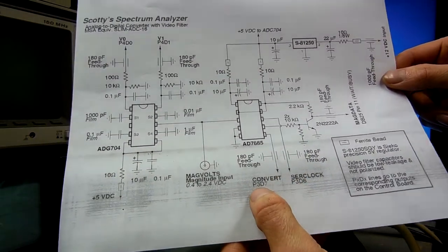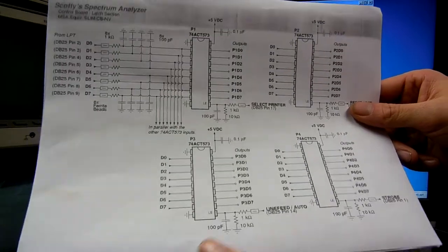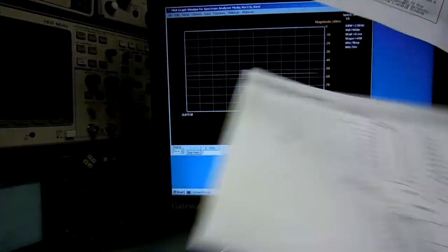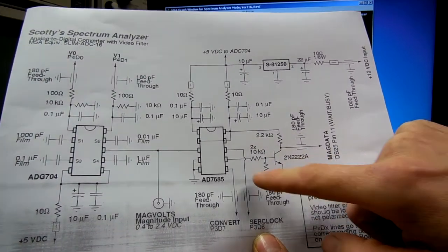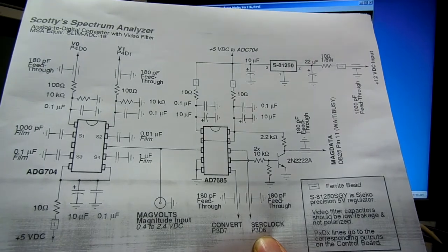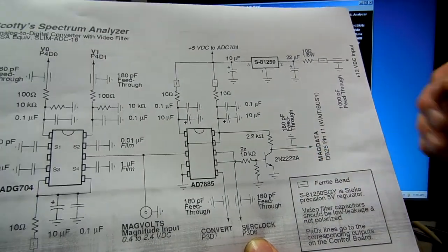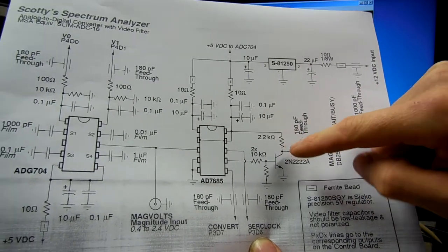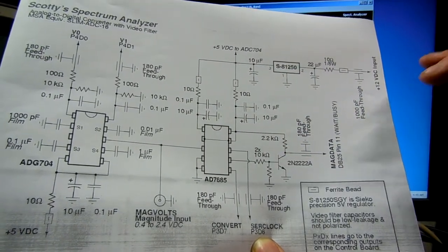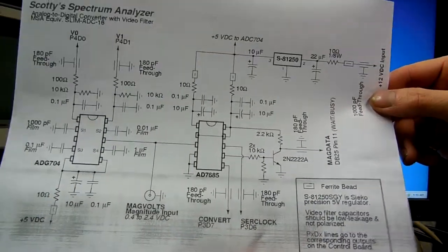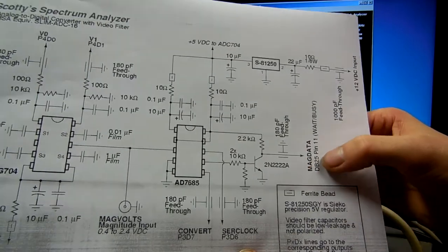The convert line goes back to P3D7 on the latch schematic. The serial clock is P3D6. There is a transistor buffer because the AD7685 can only source about 500 microamps, so we're using a 2N2222A transistor buffer. I show a 2.2K pull-up resistor, but in my final circuit I had to remove this pull-up resistor as there is a pull-up resistor in the computer. You might want to experiment with that because not all computers are going to have them today - it's a cheap way to save money, so they sometimes leave those pull-up resistors out. That goes back to pin 11 on our DB25.